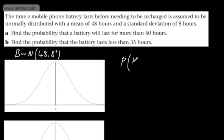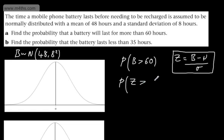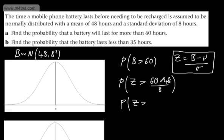We write the probability that the battery lasts more than 60 hours, then convert to the standard normal. Z equals X minus mu divided by sigma, or X minus the mean divided by the standard deviation. Substituting in, Z will be greater than 60 minus 48, divided by 8. That gives 12 over 8, which simplifies to 1.5.